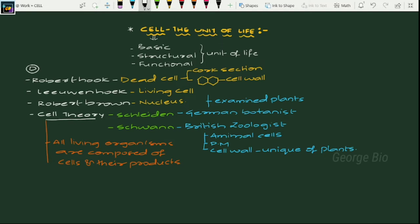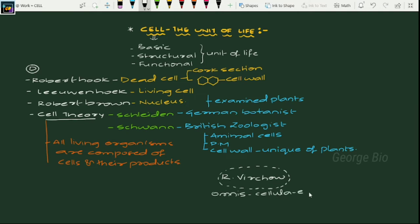Later, another scientist gave a complete framework for cell theory. Who is that? Rudolf Virchow. He gave a statement regarding the completion of cell theory: 'Omnis Cellula E Cellula,' which means all cells arise from pre-existing cells. That is how he gave a final framework to the cell theory.